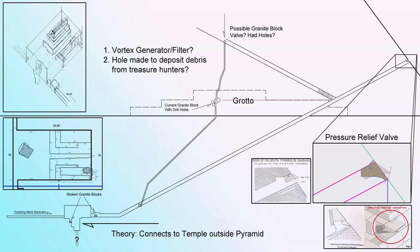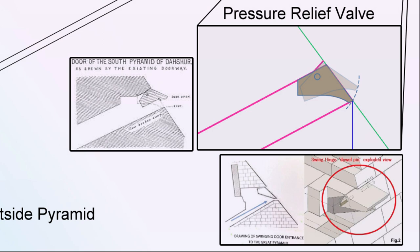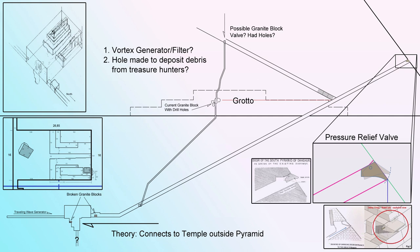The Great Pyramid had a door that opened one way — flush with the surface when closed, easy to push open from the inside outward. I believe it acted as a pressure valve. If the pyramid was producing gases — say, splitting water into hydrogen and oxygen in the subterranean chamber — those gases would pressurize the descending passageway, and eventually the pressure would build enough to open the door and release it.